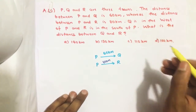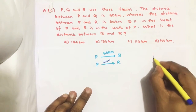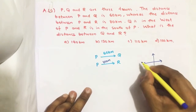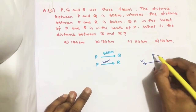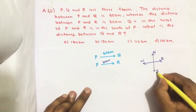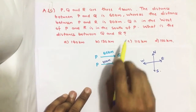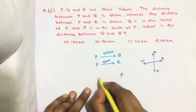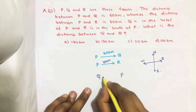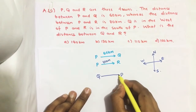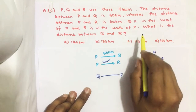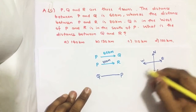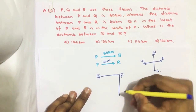Q is in the west of P. So first we need to know which direction is west — west, east, north, south. Q is in the west of P, so if P is here, Q is here. And R is in the south of P, so R is here.